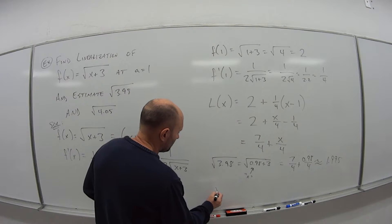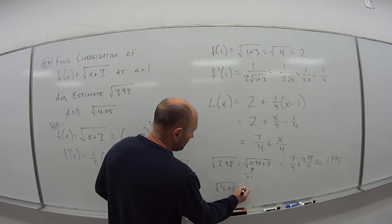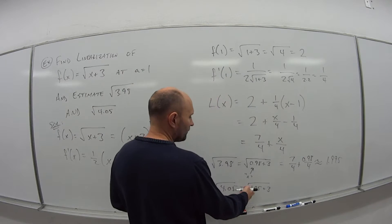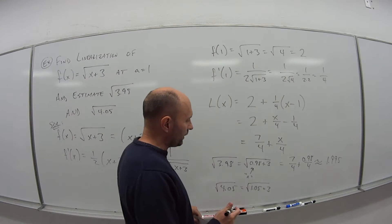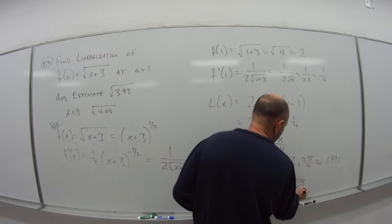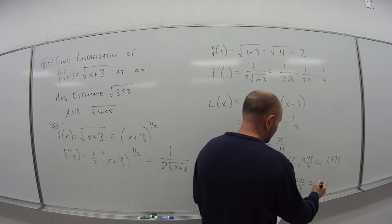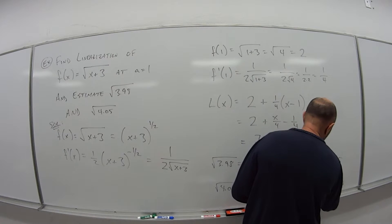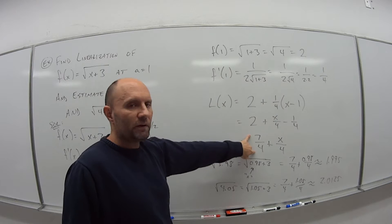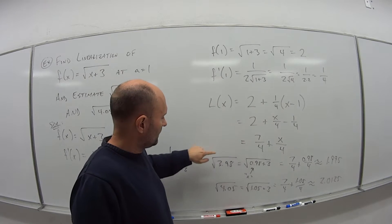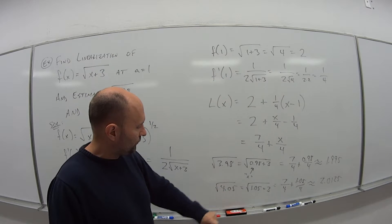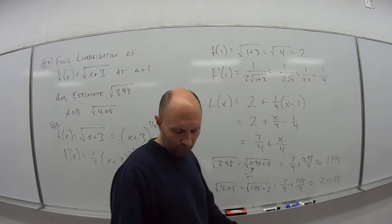Same idea for √4.05. That's the same as √(1.05 + 3), so the value I'm plugging in for x is 1.05. So: 7/4 + 1.05/4, which is approximately 2.0125. My linear approximation is 7/4 + x/4. The estimate for √3.98 is 1.995, and the estimate for √4.05 is approximately 2.0125.